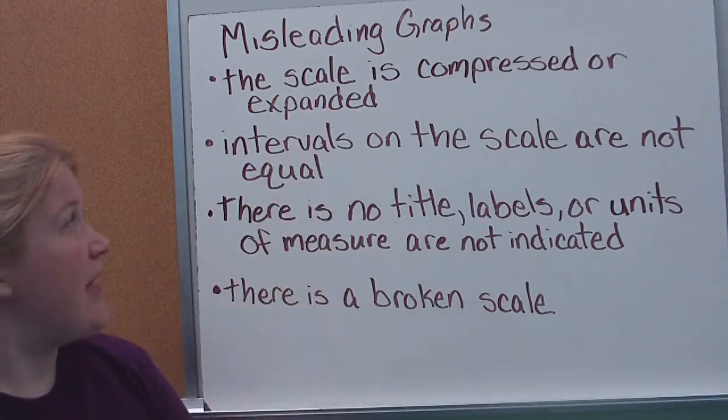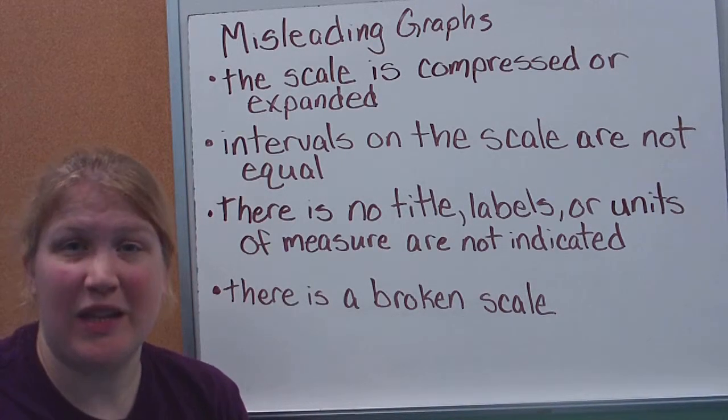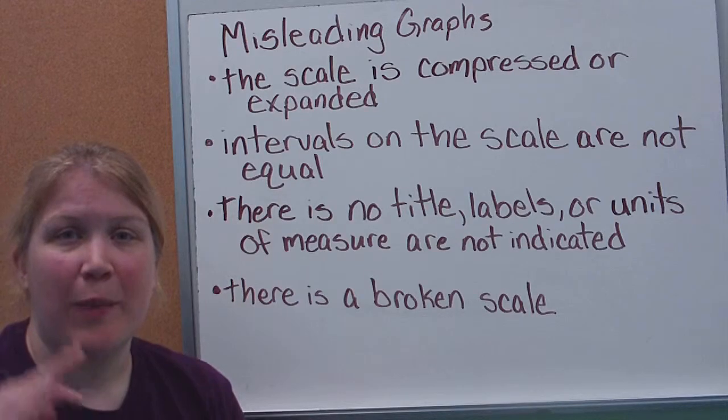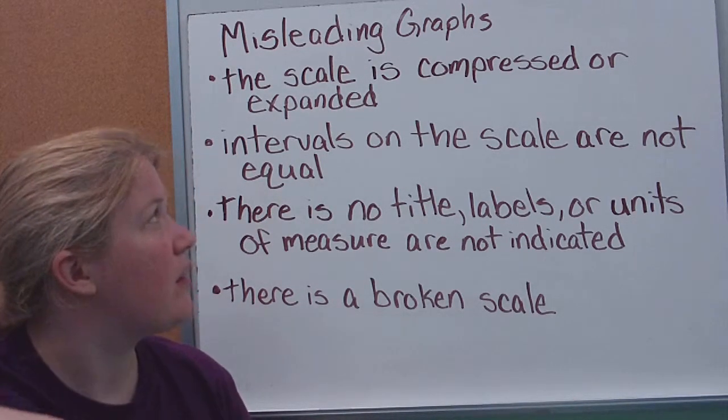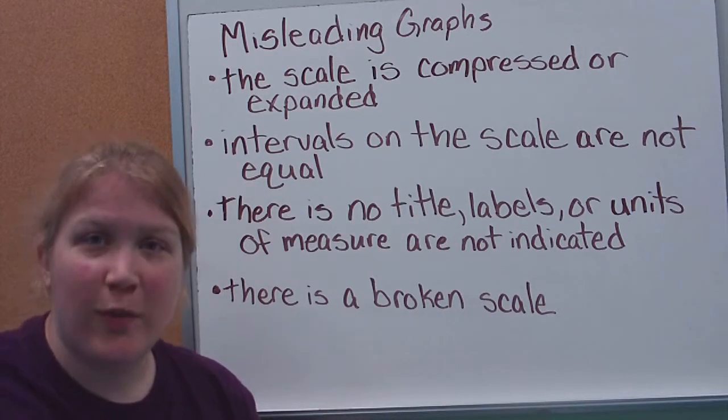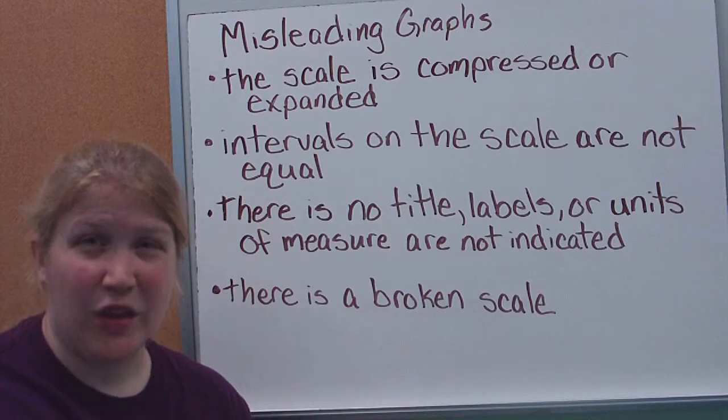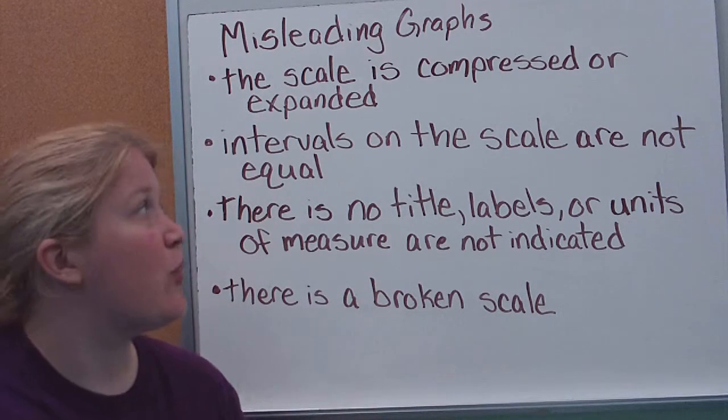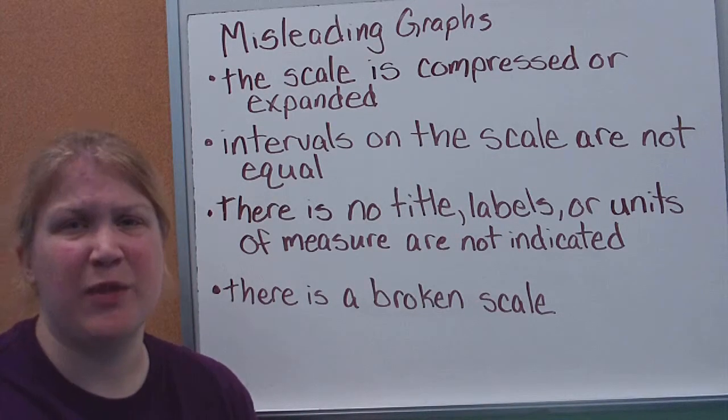The first thing you want to look at is the scale. Is it compressed or expanded? In that first one, I expanded the scale in the second graph, which made the growth look more impressive. By compressing a scale, you can make it look less impressive. By expanding it, you can make it look like it's going up more. So that's just another way you can kind of skew the data by compressing or expanding your scale, meaning picking smaller numbers or bigger numbers, spreading them out.